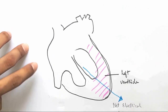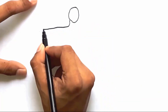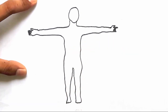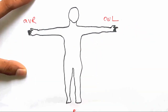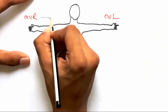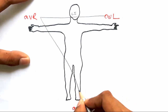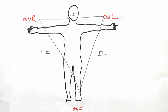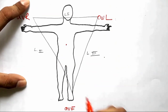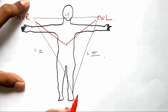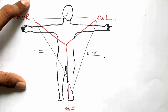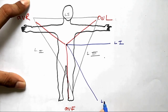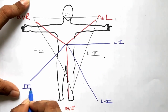Let us see where the three limb leads are situated in the human body: AVL for left, AVR for right, and AVF for foot. Lead one combines the information of R and L, lead two combines R and F, and lead three combines L and F. AVL looks at the heart from one direction, AVR from another, AVF from below, lead one from the side, lead two diagonally, and lead three from another diagonal direction.